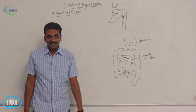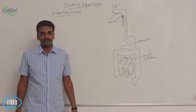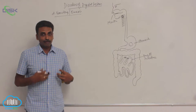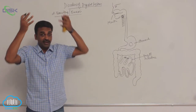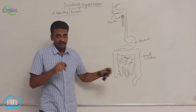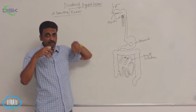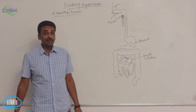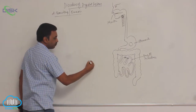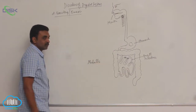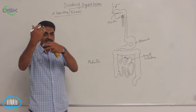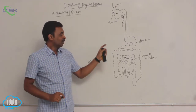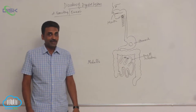The act of vomiting is a reflex act. Any irritating contents in the gut may stimulate sensory impulses, which are conveyed to the brain. A vomiting center is located inside the medulla oblongata, which is present beneath the pons varolii.